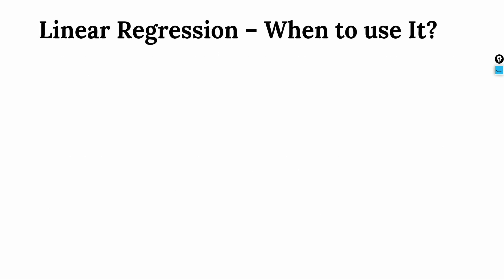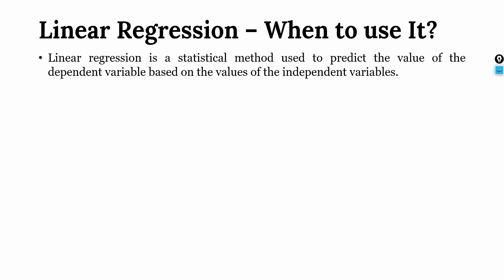So linear regression, when do we use it? Linear regression is a statistical method used to predict the value of the dependent variable based on the values of the independent variables.